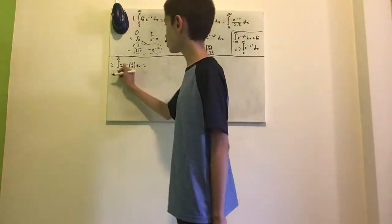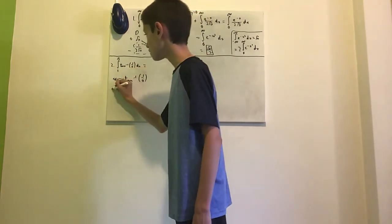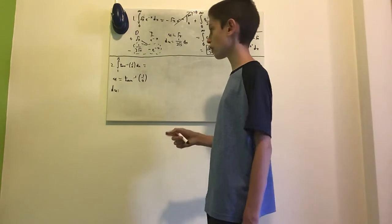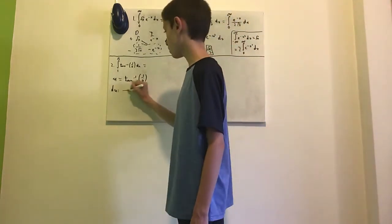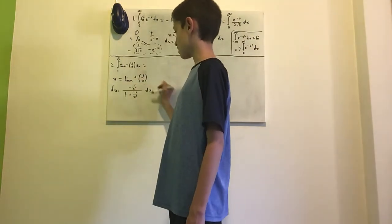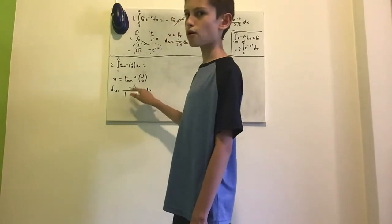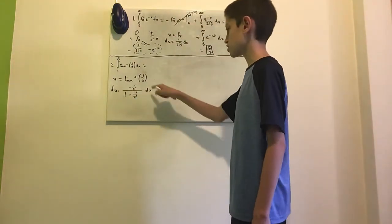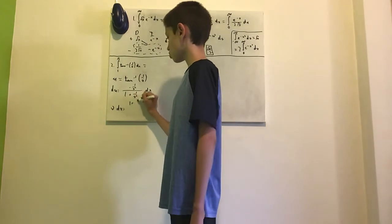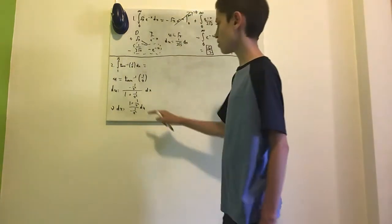For the second integral, we start by introducing a substitution: let u equal the inverse tangent of 1 over x. Then du equals — using the chain rule — the derivative of inverse tangent is 1 over 1 plus x squared, so we get negative 1 over x squared, divided by 1 plus 1 over x squared, times dx. This expression is not present in our integral directly, so we will multiply both sides to solve for dx.